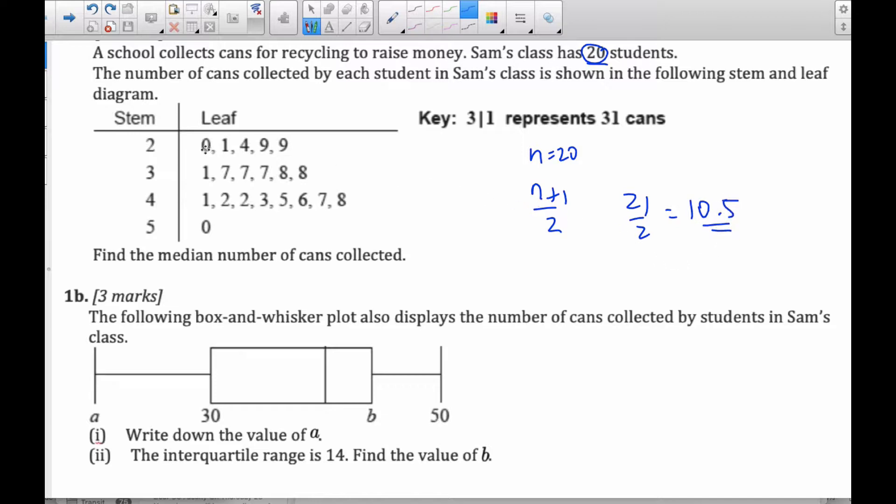So basically, I start counting from the top, there's 1, 2, 3, 4, 5, 6, 7, 8, 9, 10. And this is 11, halfway between 8 and 8 is 8. And so the median number of cans is 38, recognizing that this is a 30 and this is an 8.